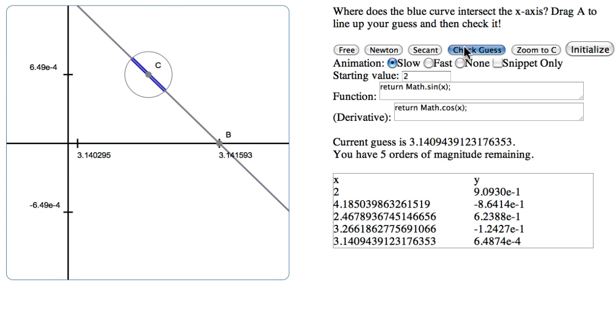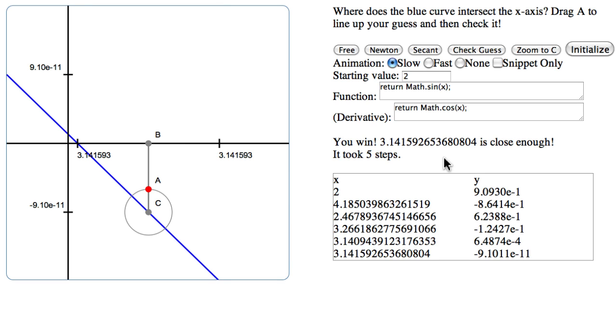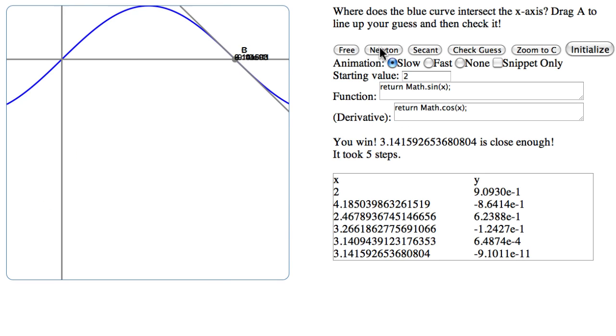And we do this again. It's e to the minus eleven. So that's a huge jump. That's seven orders of magnitude that we just zoomed in on in one step. With Newton, once it starts converging, the number, the precision, essentially sort of doubles every time.